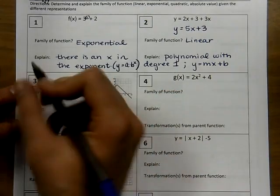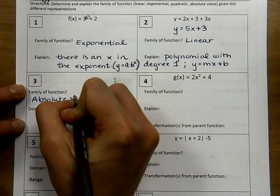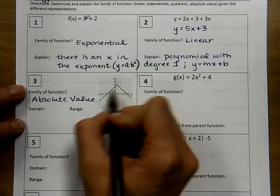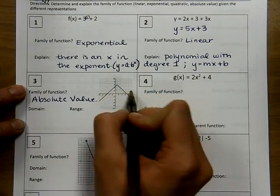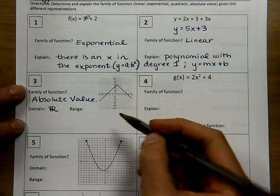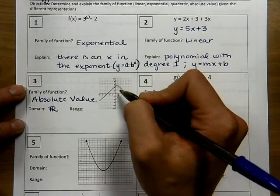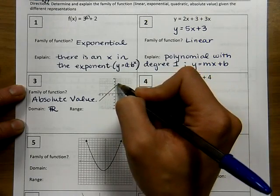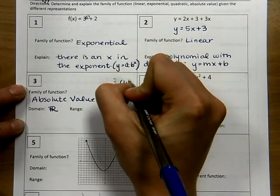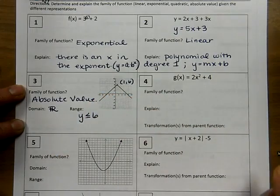I see a v-shaped graph, and I know that any v-shaped graph is an absolute value function. The domain is the possible x values, and because this graph never stops going to the left or right, the domain is all real numbers. Because this graph has a maximum at the vertex and then goes down, the range is y less than or equal to 6, since the vertex has coordinates 1 comma 6.